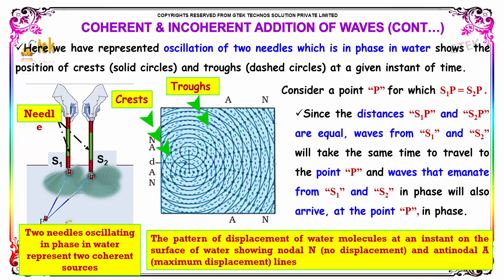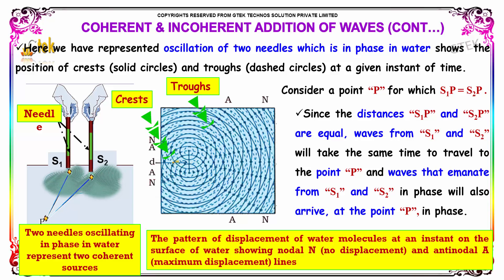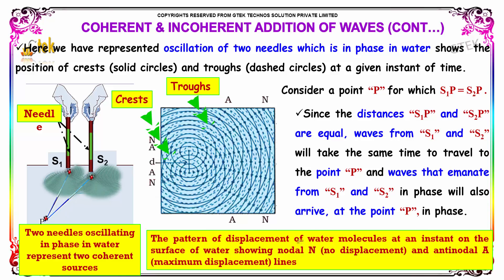The pattern of displacement of water molecules at an instant on the surface of water showing nodal N and antinodal A is given. Nodal N means no displacement, and antinodal will be having much displacement.